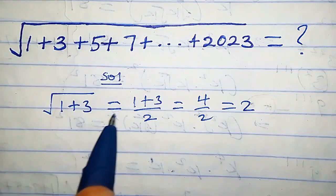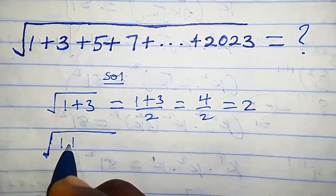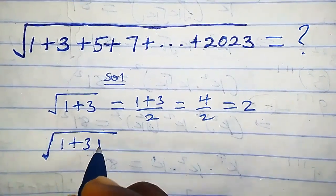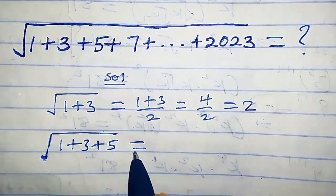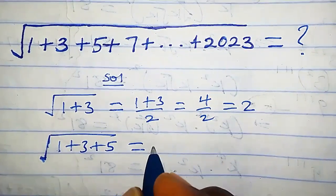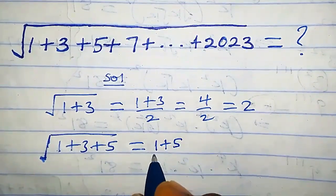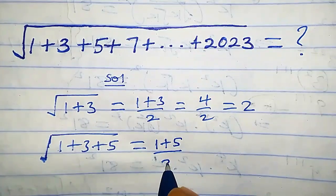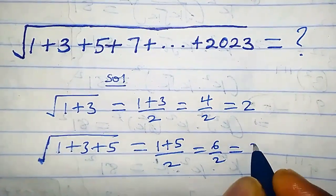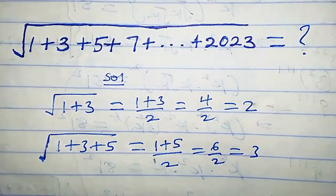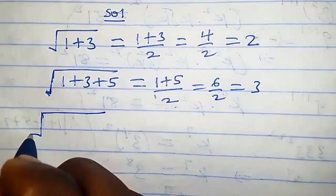Now let's consider the first three terms. We have square root of one plus three plus five. This equals — when we add the first and the last term, we have one plus five, and we divide it by two. This equals six over two, which is three.